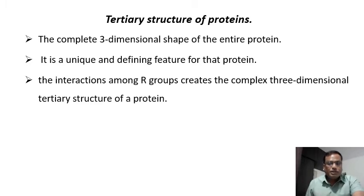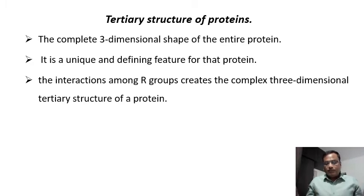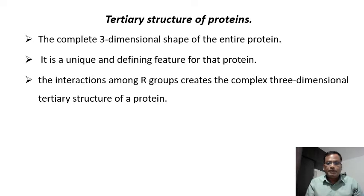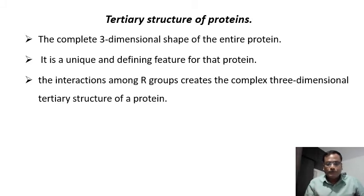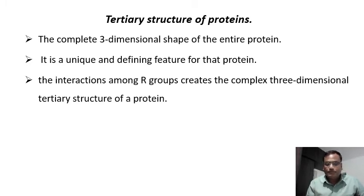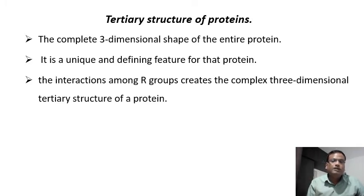The tertiary structure is commonly called the three-dimensional shape of the entire protein. The amino acid sequence is the primary structure; the helical structures and beta pleated sheets constitute the secondary structure; and the overall three-dimensional shape that the whole protein develops — due to the alpha helix and beta sheets, which in turn arise from the primary structure — is called the tertiary structure.